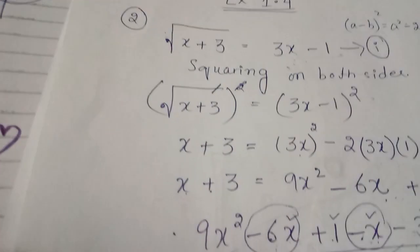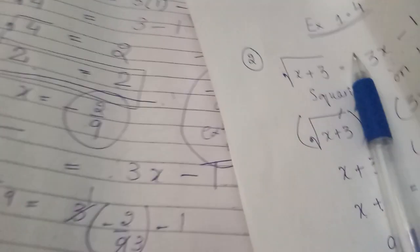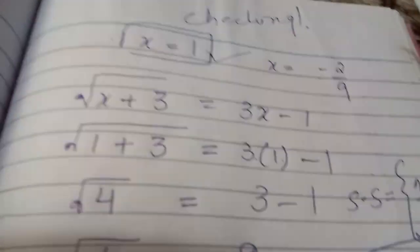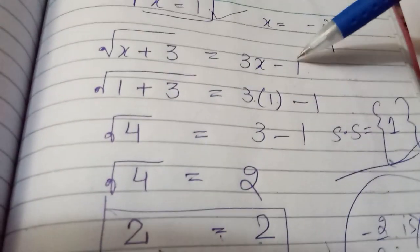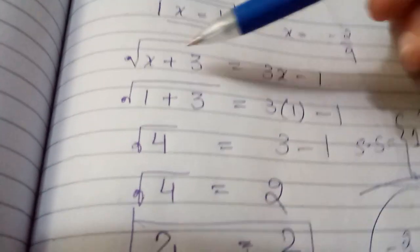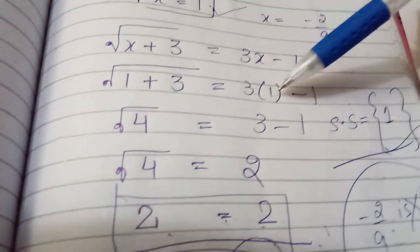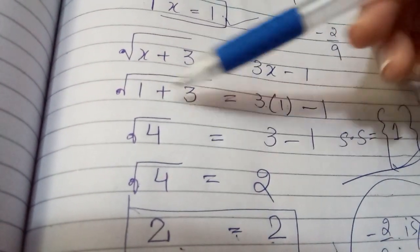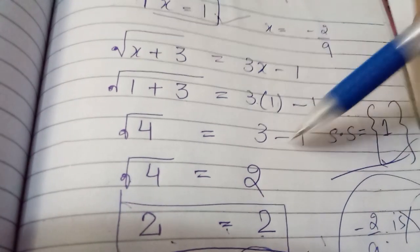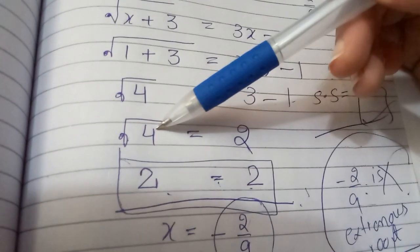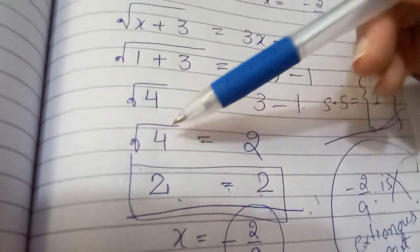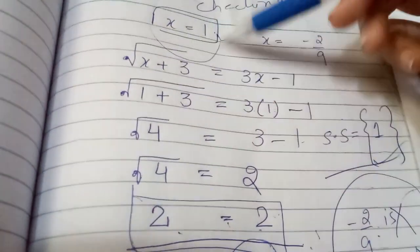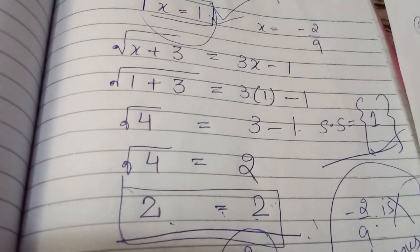Putting x = 1 into the equation: on the left side, x + 3 = 1 + 3 = 4, so √4 = 2. On the right side, 3(1) − 1 = 2. Both sides equal 2, so x = 1 is a valid solution — this is true.